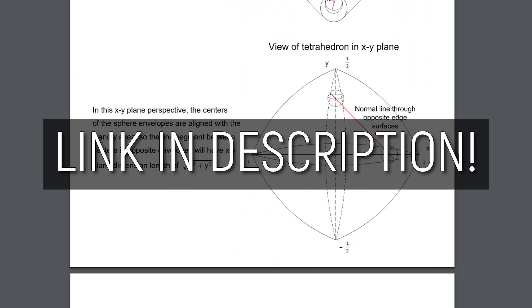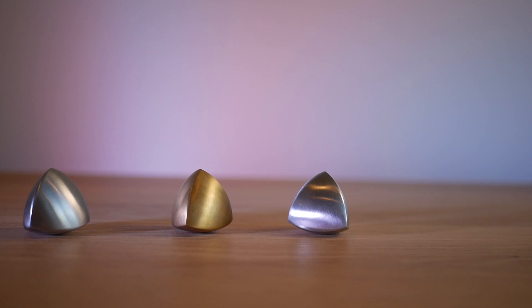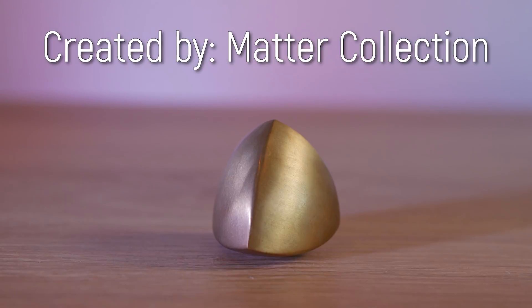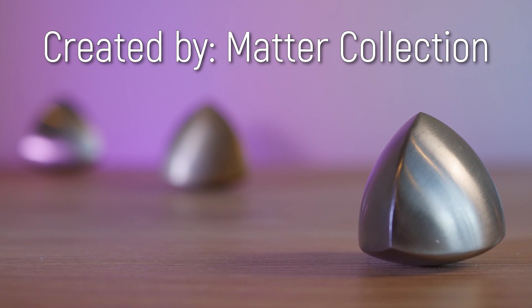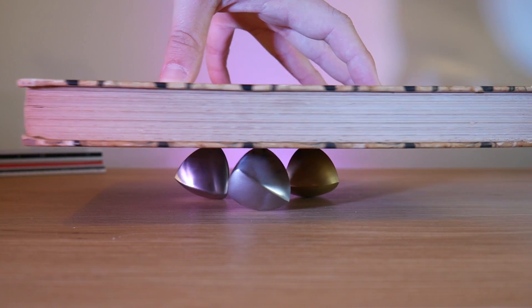And if you want proof, well, here's the proof. These metal examples were created for a Kickstarter by Matter Collection. Each is solid metal, CNC machined and hand-finished to create the precise surfaces required for a true solid of constant width.